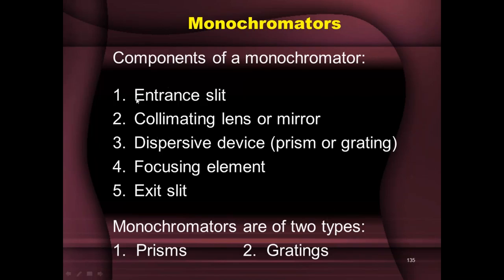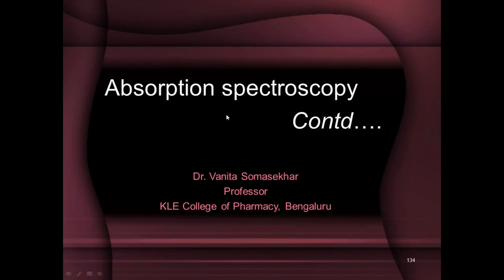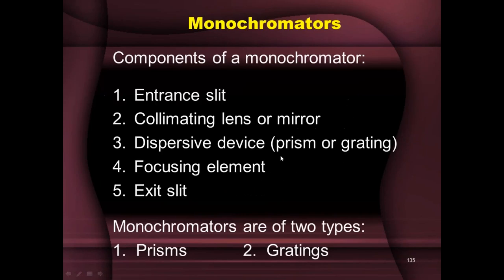So that was what we saw last time — comparing the two filters. Today we'll start with monochromators. What are monochromators, and what are the basic components? All monochromators will have an entrance slit, a collimating lens or mirror to make the radiation parallel, and a dispersive device which spreads out or disperses the different wavelengths. This could be a prism or grating.